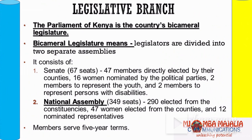Currently the Parliament of Kenya is the country's bicameral legislature. The Senate has 67 seats: 47 members directly elected by the counties, 16 women nominated by political parties, two members to represent the youth, and two members to represent persons with disability — giving you 67.